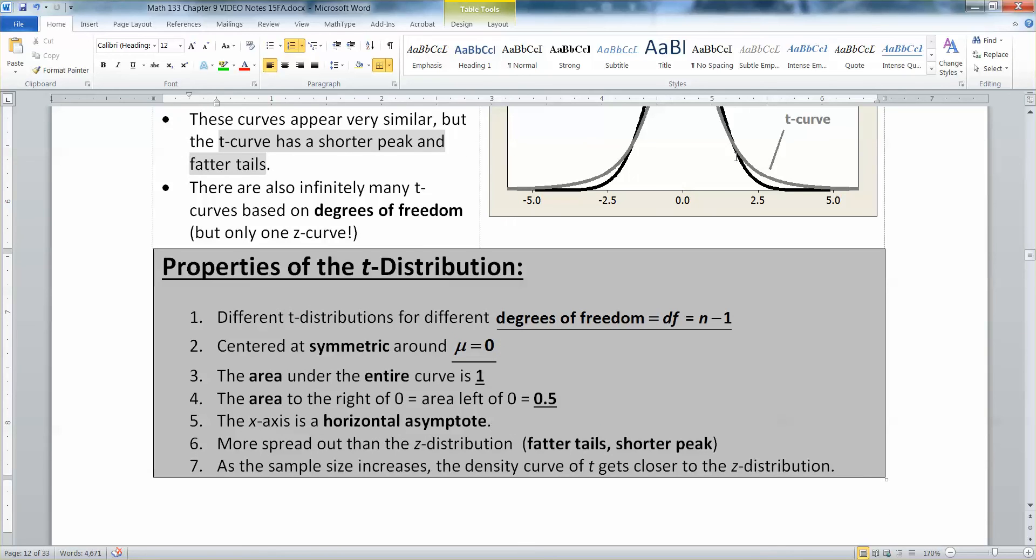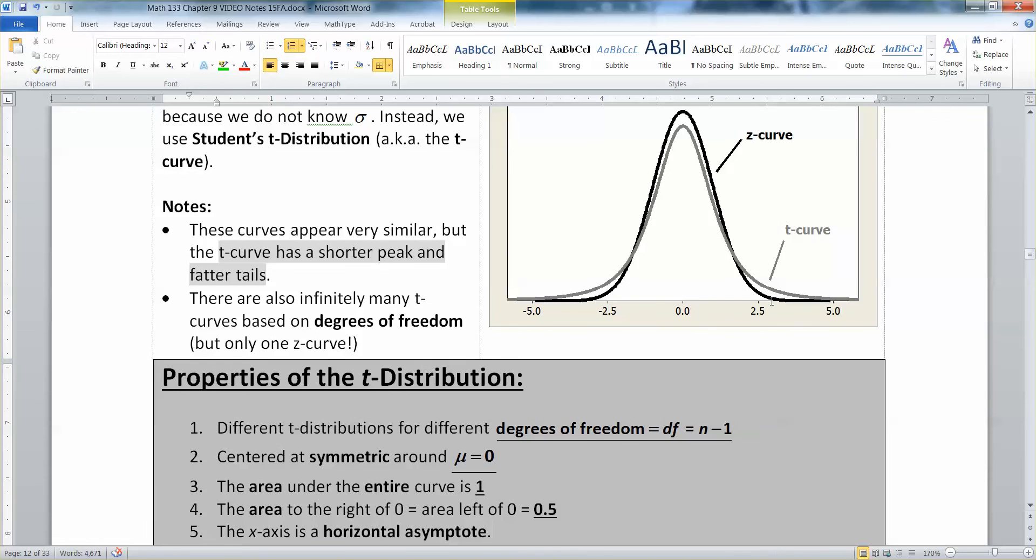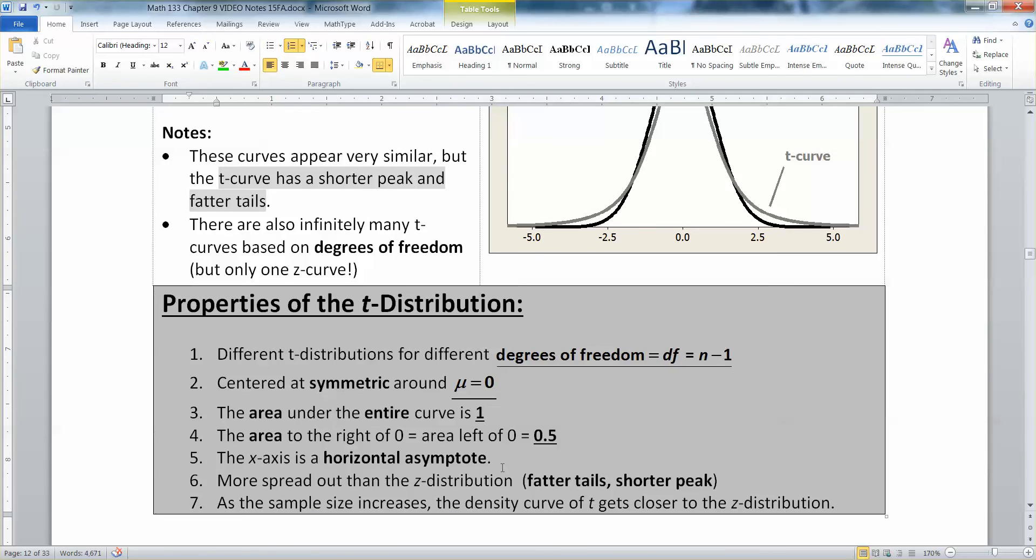Now the x-axis is a horizontal asymptote, just like it is for the black curve. It's just that it takes a little while longer to get there. That's why the tails are a little fatter. So it's still the asymptote, but it takes a little bit longer to get down towards that x-axis, whereas the black curve has smaller spread, so it gets to the x-axis much faster. They both never touch the x-axis, that's what an asymptote is.